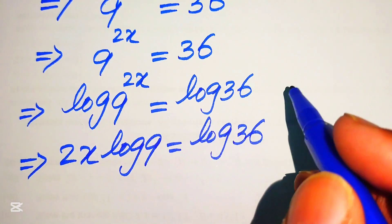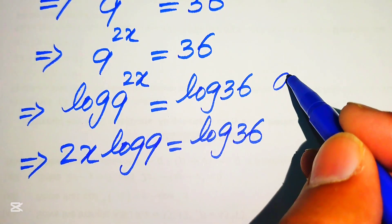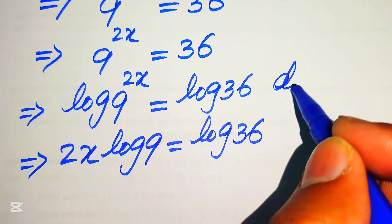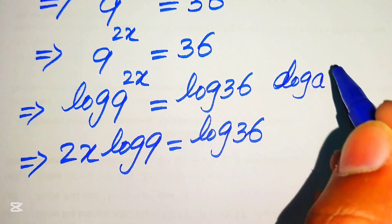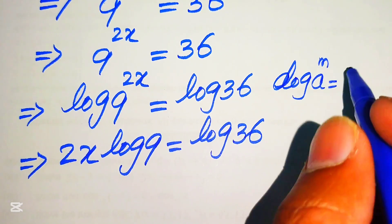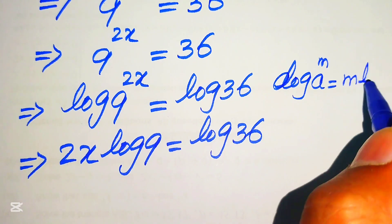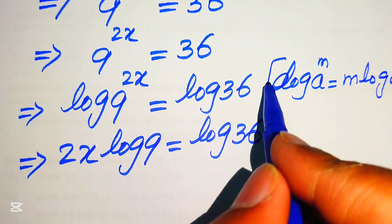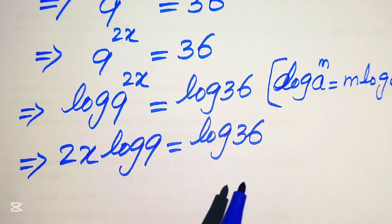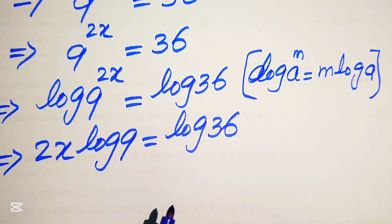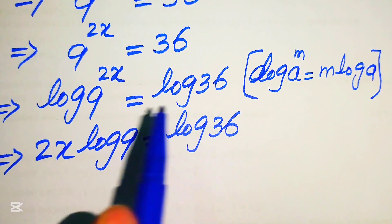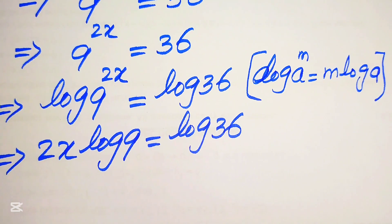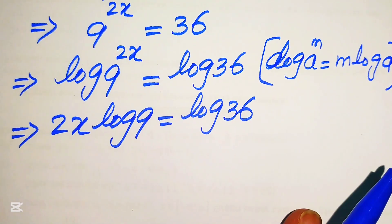Here we apply the logarithmic law: if we have log of a to the power of m, we move the exponent m to the front of the log and it is written as m times log a. According to this logarithmic property, we move 2x to the front of this log and write it in this form.